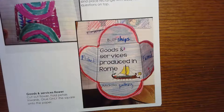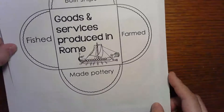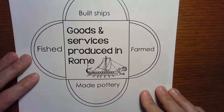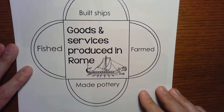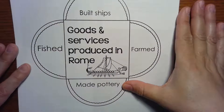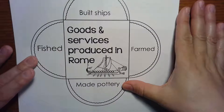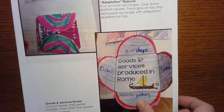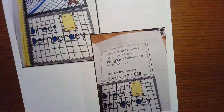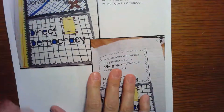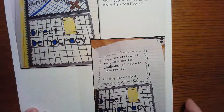I do have a copy of this one, so here's a big picture — you can just pause. They built ships; they were shipbuilders. They farmed, they made pottery, and of course a lot of fishing happened around Rome.